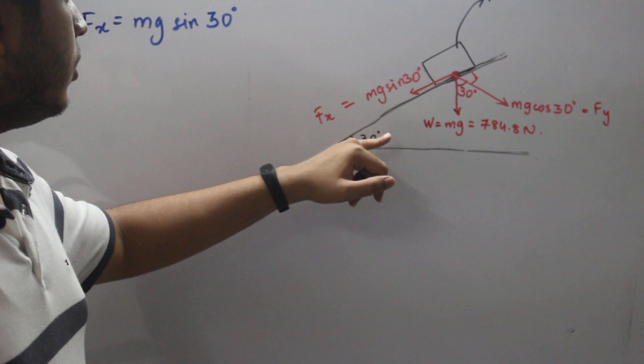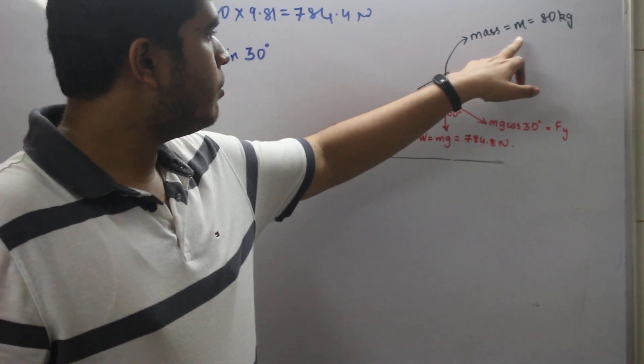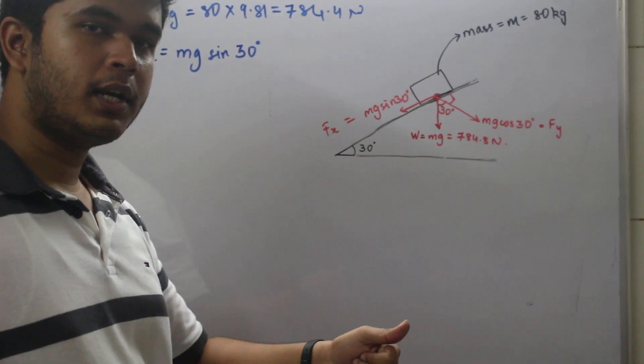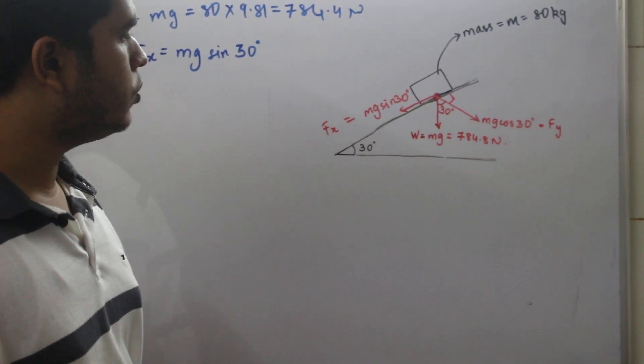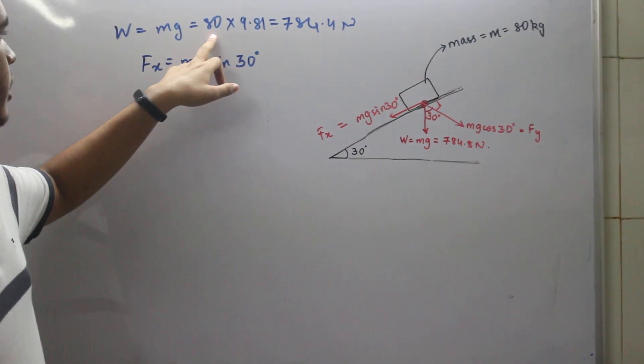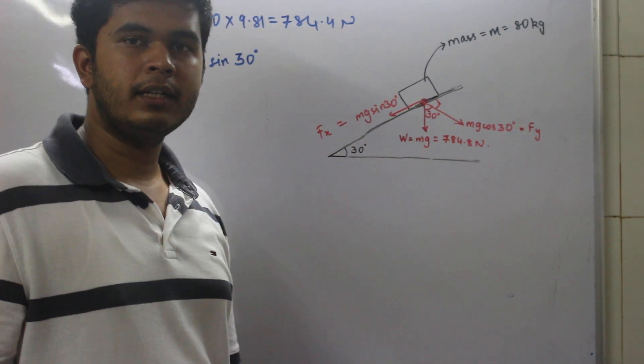For example, there is an inclined surface of 30 degrees with respect to the horizontal. You have kept a mass m of 80 kg on it. W, that is the weight of that mass, m times g, is acting downwards. m times g, m is 80 kg, g is 9.81. Multiplication of both gives me 784.4 newtons acting straight downwards.